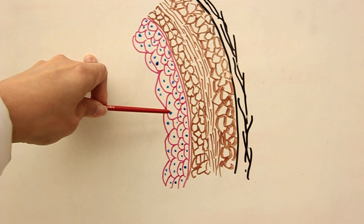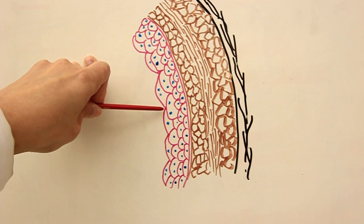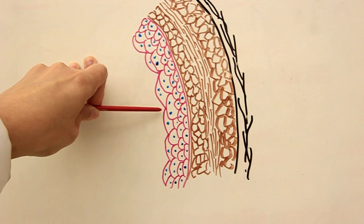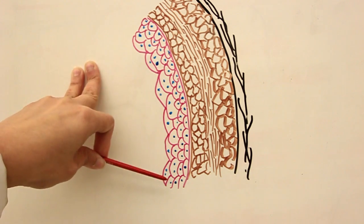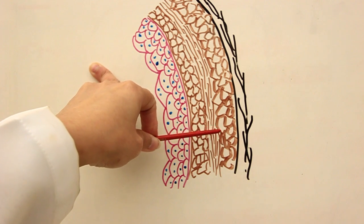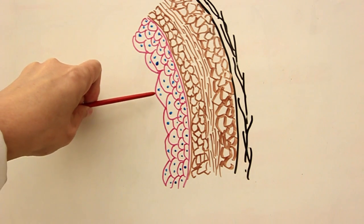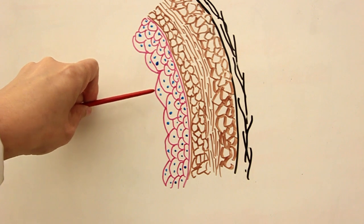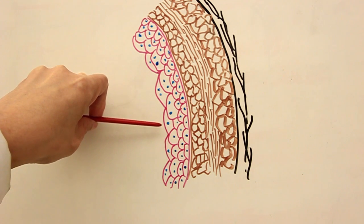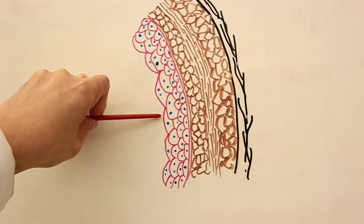So the tight junctions among these cells of transitional epithelium do not allow the seepage of urine. Also, these umbrella-shaped, dome-shaped cells, which are sometimes binucleate—they have double nuclei—have the ability to expand more. And we need a lot of expansion when it comes to the distension of bladder.